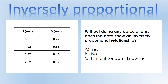Looking at this table here, I've kept it very general - we've got some kind of independent variable and some kind of dependent variable. We've changed the independent variable in some way and measured the effect on the dependent variable. Looking at this data without doing any calculations, do you think this shows an inversely proportional relationship? Select your answer - yes, no, or don't know yet.